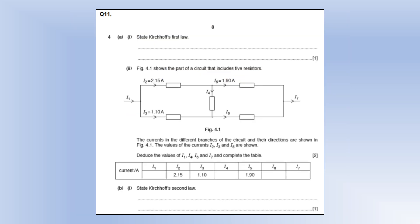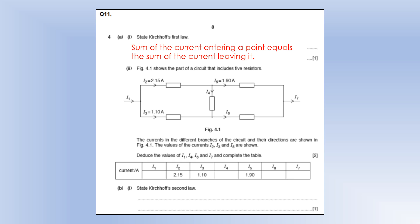Kirchhoff's first law: the sum of the current entering a point equals the sum of the current leaving it — equivalently, the sum of currents at a point is zero with plus or minus signs assigned. Applying this to a network of resistors: I1 is the sum of I2 and I3, so it's 3.25. I4 is the difference between I2 and I5, giving 0.25. I6 is the sum of I4 and I3, giving 1.35. I7 must equal I1 because current entering equals current leaving.